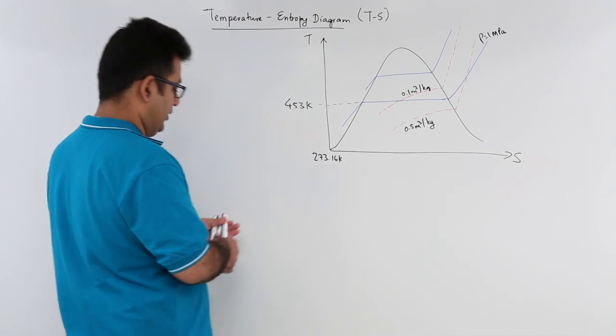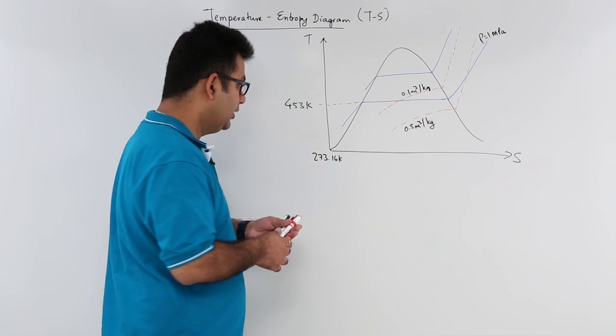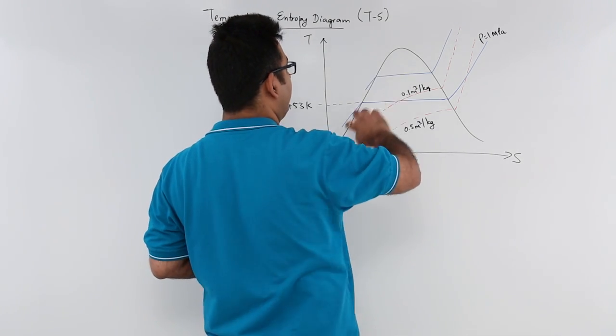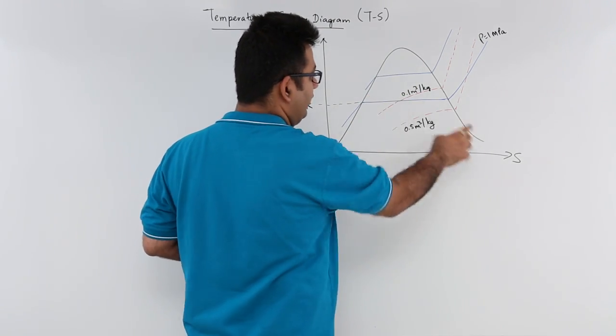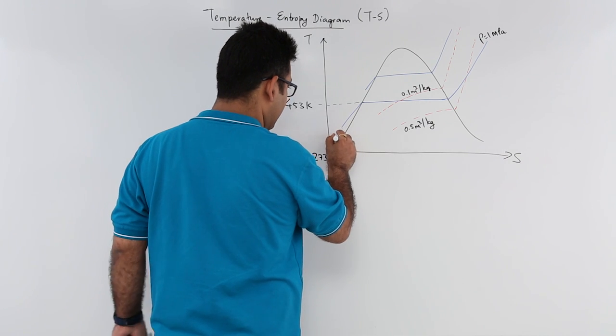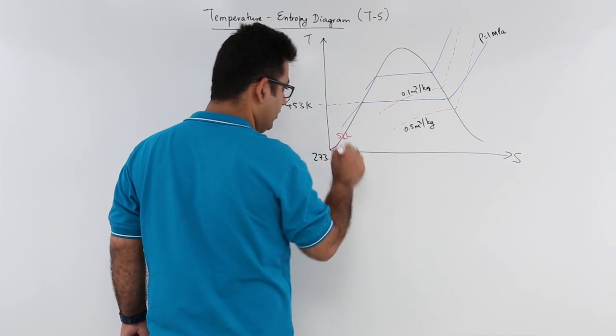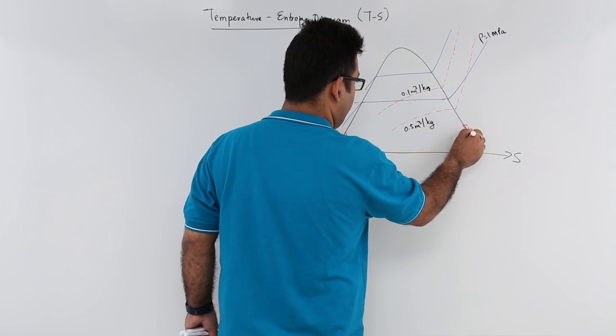Now there are two lines which we need to understand. This line is the saturated liquid line and this is the saturated vapor line.